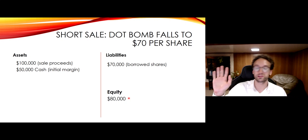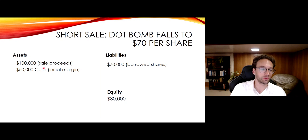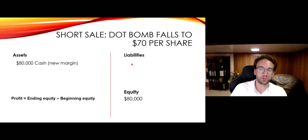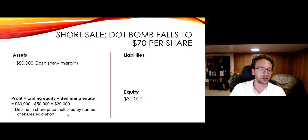Let's say the stock's dropped as much as I think it will — I'm going to buy back the stock for $70,000. And that's called covering your short sale, because you buy it back and close the liability. Both your assets and your liabilities go down by $70,000, because you use $70,000 of cash to buy back the stock and close your liability. Your ending balance sheet has $80,000 of cash and no liabilities, so equity is $80,000. Your profit is ending equity minus beginning equity, which is $30,000. You can also calculate this as the decline in share price multiplied by the number of shares sold short.